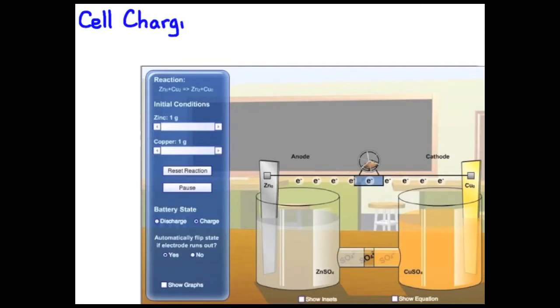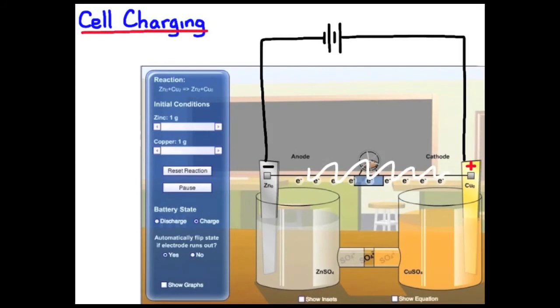Of course we don't use hamsters to do this, we use devices that can generate current like another cell or a battery or a generator. Conventional current flowing in the opposite direction means flowing clockwise in this case. So I have to hook up my charging supply like this.